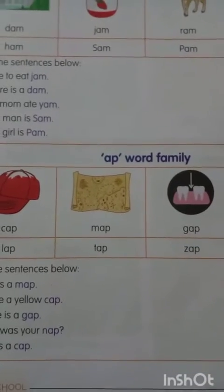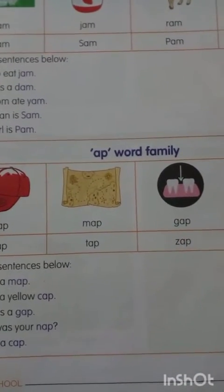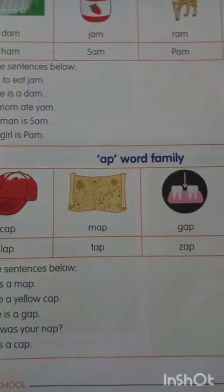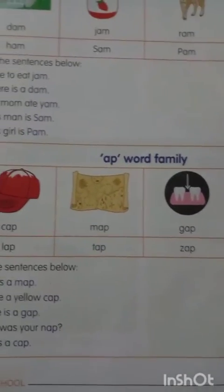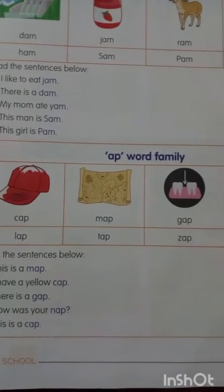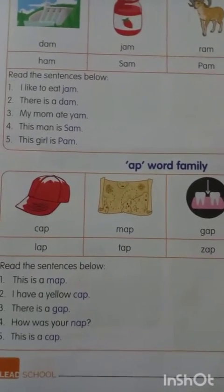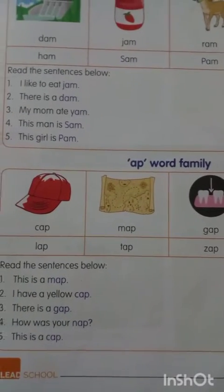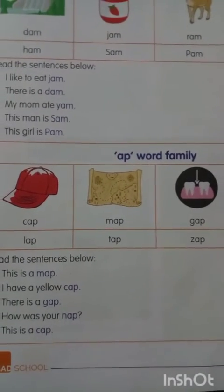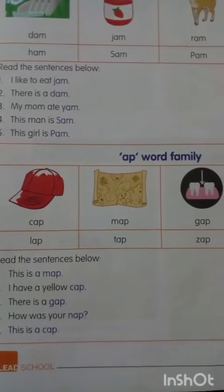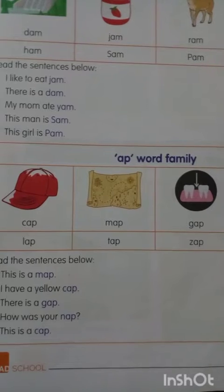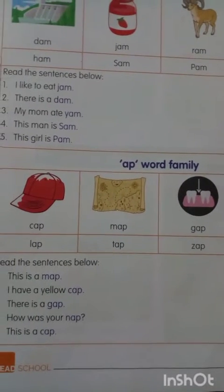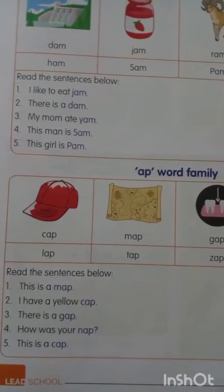Next is the AP word family. Words end with AP: cap, map, gap, nap, yap, sap, tap, lap. Sentences: This is a map. I have a yellow cap — here they have given a red cap. There is a gap. How was your nap? Nap means a short sleep. This is the AP word family.